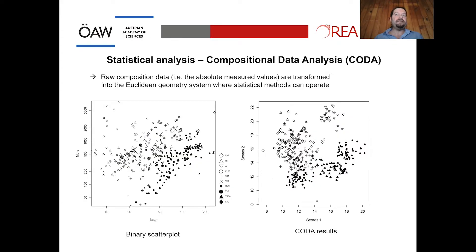The resulting raw composition data must be statistically treated using compositional data analysis — CODA — meaning the absolute measured values are transformed into a Euclidean geometry system where standard statistical methods can work. In a binary scatter plot with raw compositional data of radiolarites from Carpathian versus northern Alpine sources, we get a basic separation but it is not very good. When we apply the CODA plot, we achieve consistent group building and statistically enhanced results.